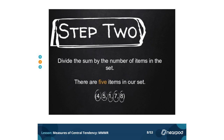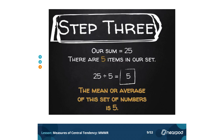Step 2: divide the sum by the number of items in the set. There are 5 items in our set — 4, 5, 1, 7, and 8 — that makes a total of 5 different numbers. Step 3: our sum was 25 and there are 5 items in our set, so we do 25 divided by 5, and that gives us 5. The mean, or average of the set of numbers, is 5.